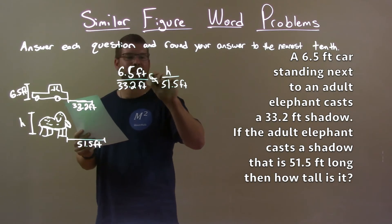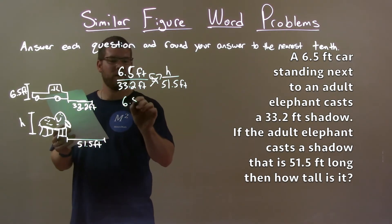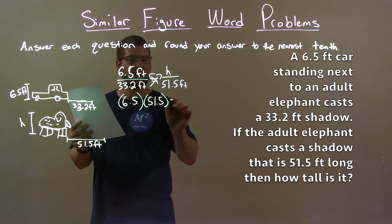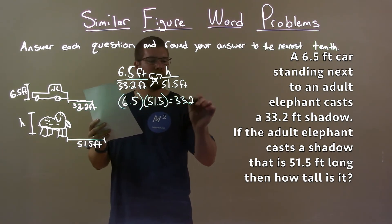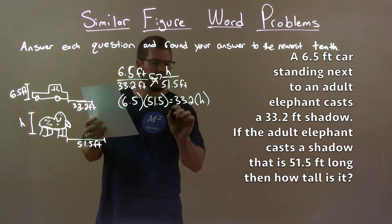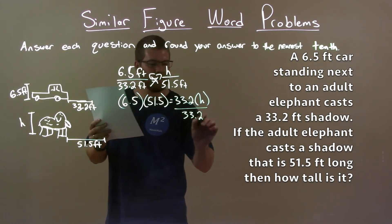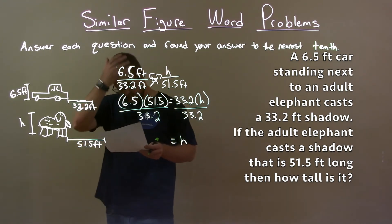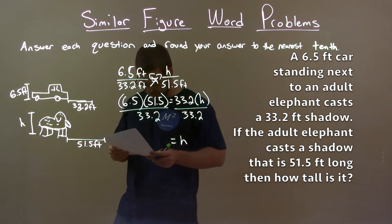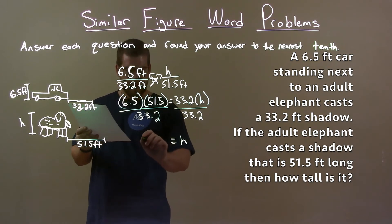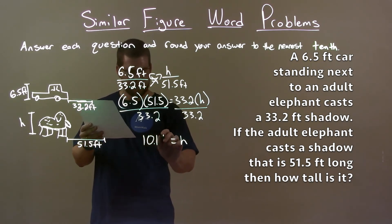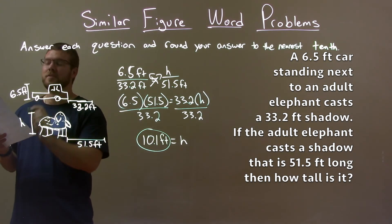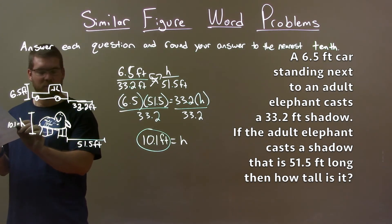We cross multiply: 6.5 times 51.5 should equal 33.2 times H. We divide both sides by 33.2 to get H by itself. Taking 6.5 times 51.5 divided by 33.2, we get 10.1 feet. So the height of our elephant is 10.1 feet.